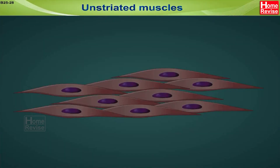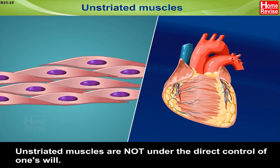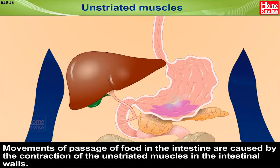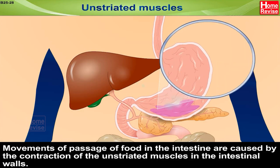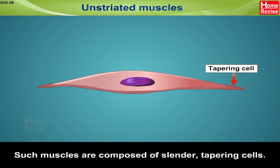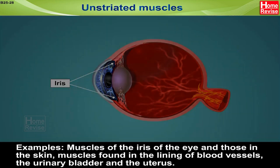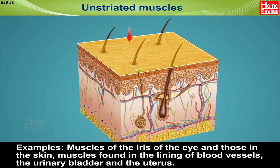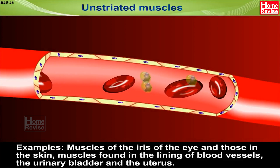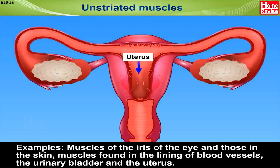Unstriated Muscles: Unstriated muscles are not under the direct control of one's will. Movements of passage of food in the intestine are caused by the contraction of unstriated muscles in the intestinal walls. Such muscles are composed of slender tapering cells. Examples include muscles of the iris of the eye, those in the skin, muscles found in the lining of blood vessels, the urinary bladder and the uterus.